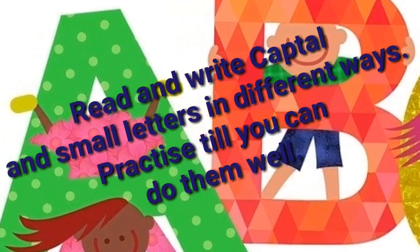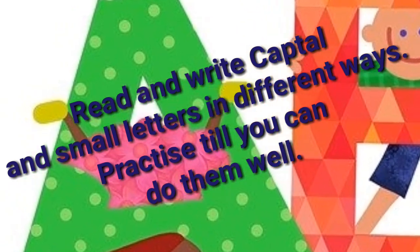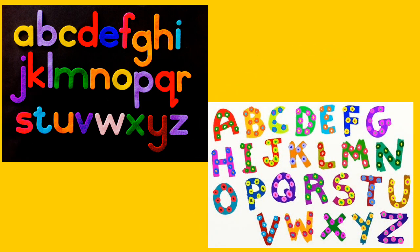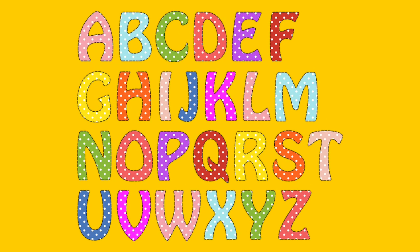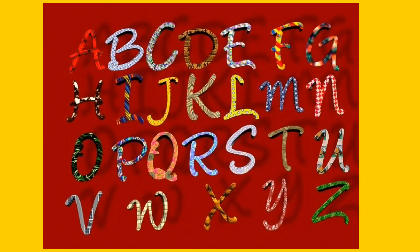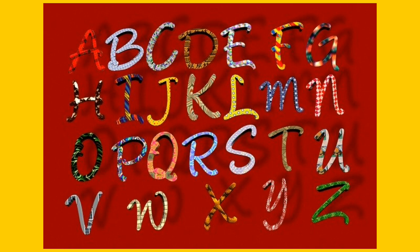Let's start the second question. Read and write capital and small letters in different ways. Practice it. This is a small letter and this is capital letter chart. You can practice it in a straight line or in circle shape. Also write the small and capital letters on a plain paper, in small, tiny, and big shapes. You can also write in many fancy shapes. Practice it till you can do them well.